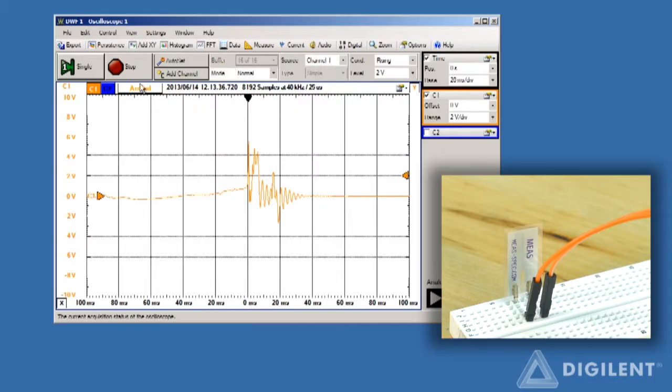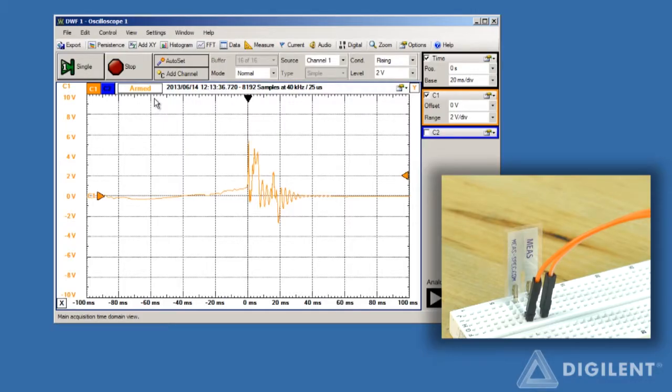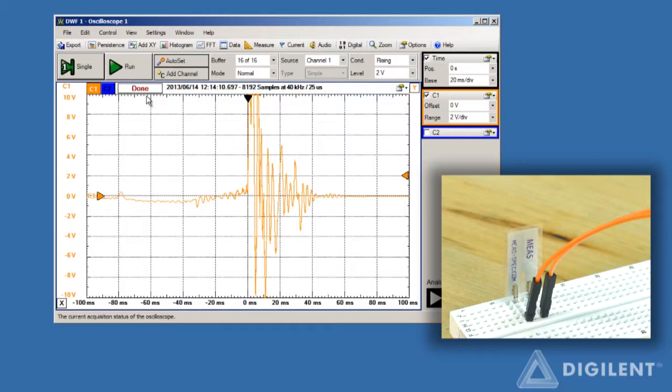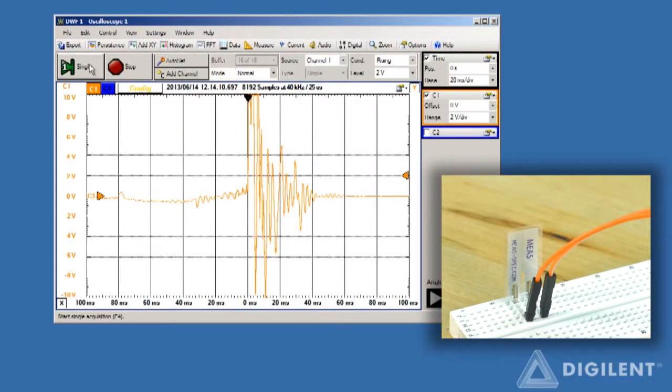Notice that the status box claims it's armed. This means that the trigger condition is set and the scope is waiting for the condition to be met so that the data acquisition can start. If we now flick the sensor, the condition is met, the data is acquired, and the status is done. Once the entire window of data is acquired, it's displayed and held. The data will remain in the window until another request to acquire data is received.